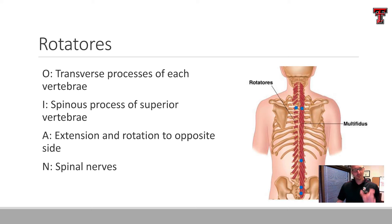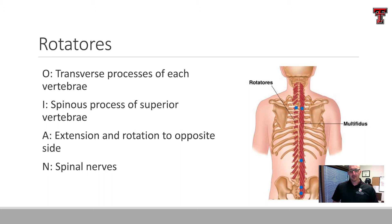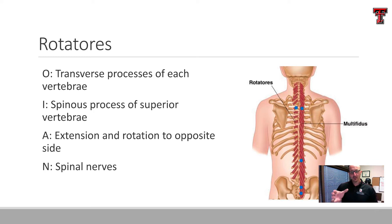The rotatores run a little bit more horizontally — originating on the transverse process and inserting into the spinous process of a superior vertebra. As you might guess from the name, they contribute to rotation. Any one segment probably isn't going to be enough to really notice — these work in unison with one another in order to produce a torque or a twist from segment to segment up the spinal column.